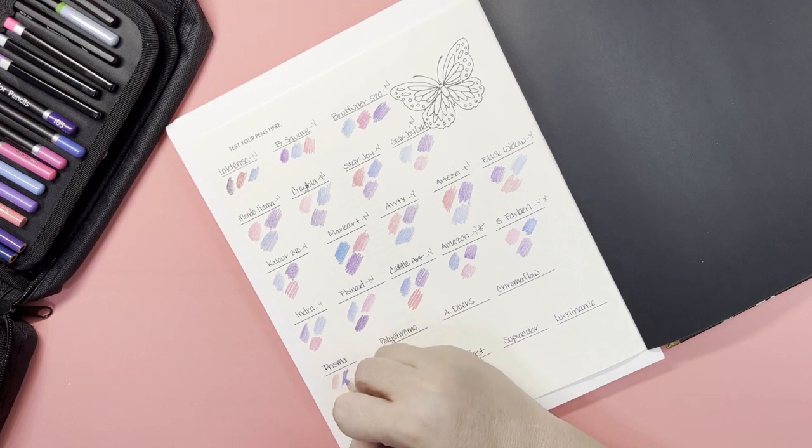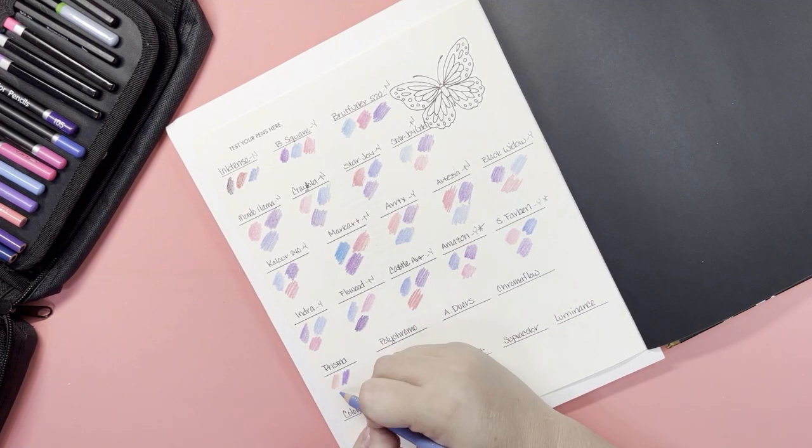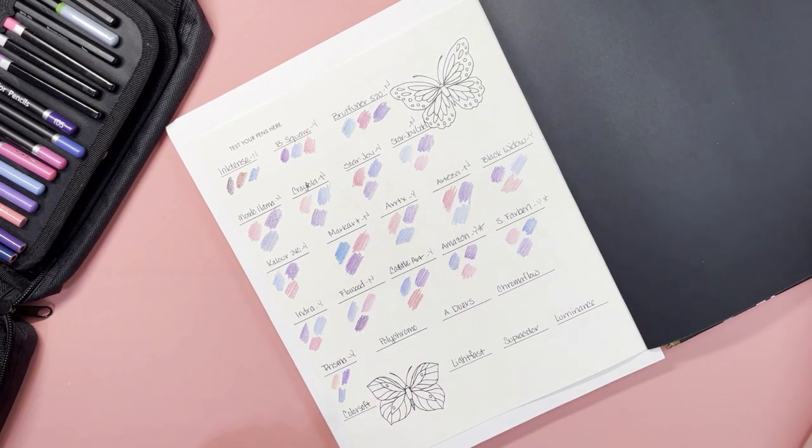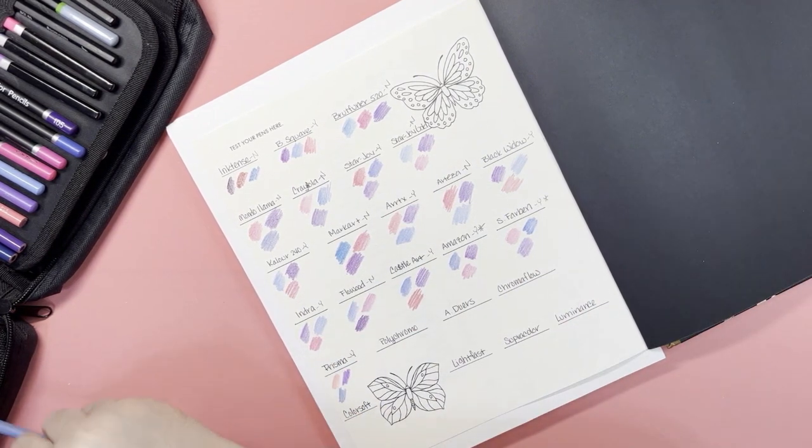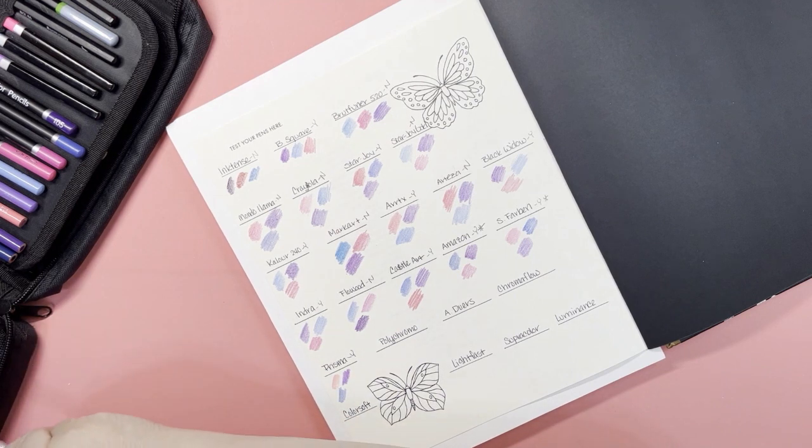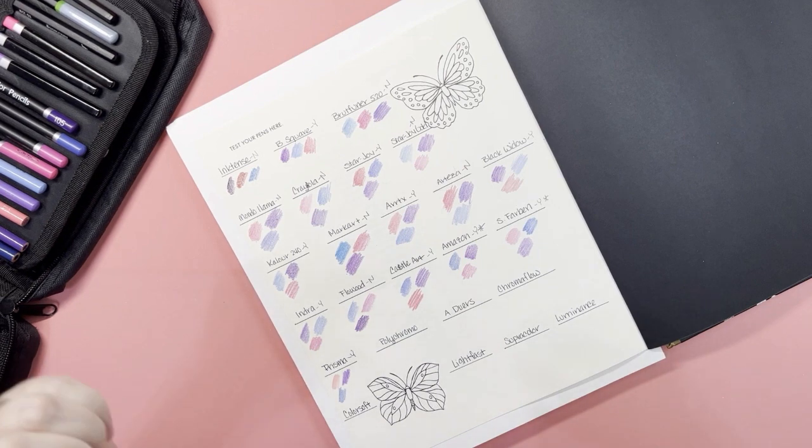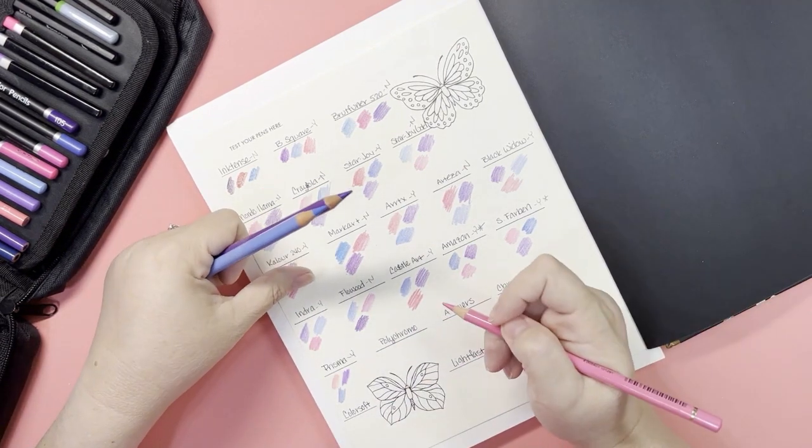Prismacolors, oh yeah, can't go wrong with these. Yeah, these are amazing, like crayons. Like the Indras, these are my go-tos. If I had to choose, I would most usually use these, except for the Rita Berman paper. I do not like Prismas on Rita Berman paper.